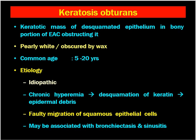Normally, the epithelium migrates and comes out from the external canal, meaning the migration of squamous epithelium is outwards, not inwards. But when there is faulty migration, it may go inward. Conditions leading to ciliary dysfunction, like bronchitis and sinusitis, may also be associated with keratosis obturans.